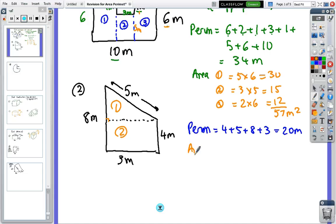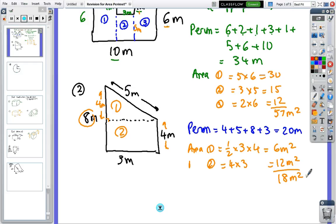But for the area, area one is a triangle, so that's half times the base is three. Now, that is four, so that means that that is also four, because we have a total of eight, so half base times height, so area one is two, area two is a rectangle, four by three, which is twelve, so the total is eighteen.